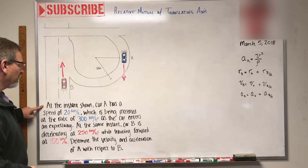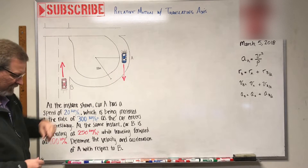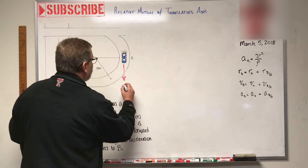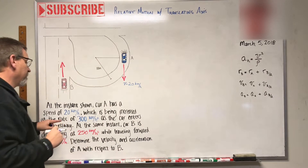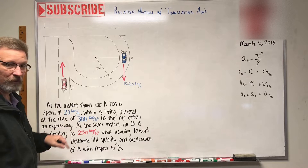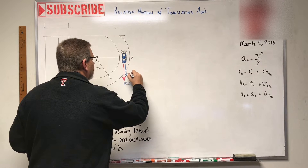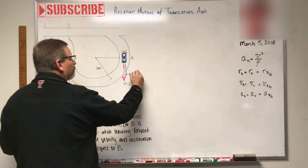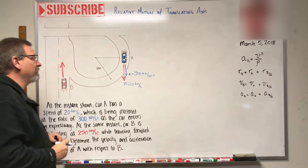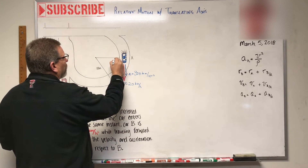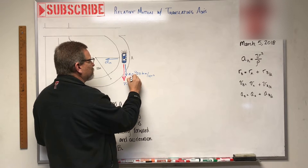At the instant shown, car A — the blue car — has a speed of 20 km/h, and that speed is increasing at a rate of 300 km/h². So there's a positive tangential acceleration. Car A also has a normal component of acceleration that we'll need to calculate.